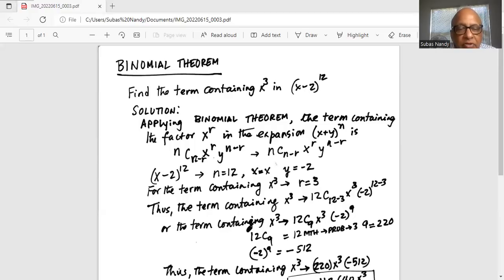So for (x-2)^12, n is 12, x is x. But for y, we have to be careful—it's minus 2, not plus 2. Since the original binomial theorem is (x+y)^n, y is minus 2.